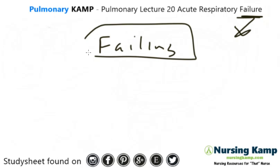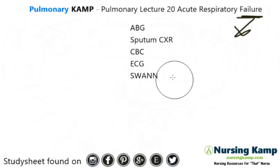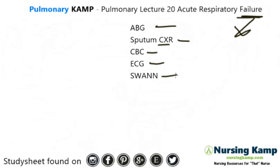We need to have some sort of assessment in order to figure that out. We have to take immediate action because the patient is already failing. We draw an ABG, we might draw a sputum, we get a chest x-ray, we get a CBC, an ECG, and potentially a SWAN depending on how bad the patient is.